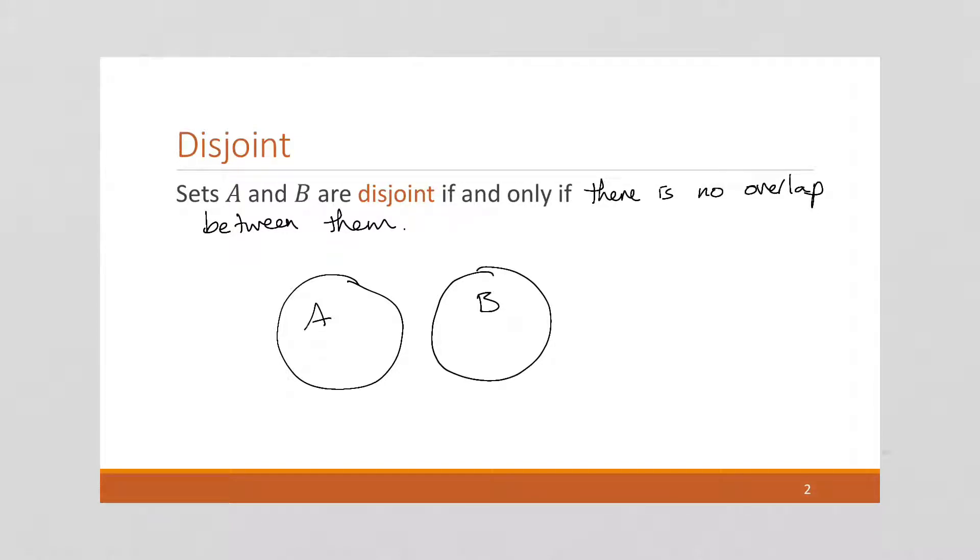A way of formally saying this is that A intersect B equals the empty set. There is no overlap. There are no elements in common between both A and B. We say these sets are disjoint.